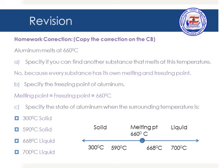Part B: specify the freezing point of aluminum. The melting point is equal to the freezing point, which means that the freezing point is also equal to 660 degrees Celsius.